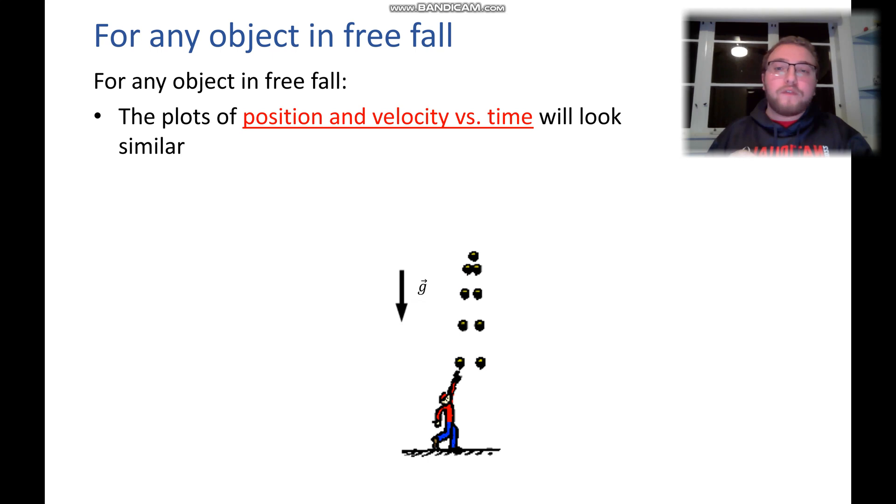Now for any object in freefall, our position versus time and our velocity versus time graphs will look very similar. So for something thrown upwards, we're going to have an initial velocity and this position on the y-axis is actually our height.